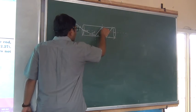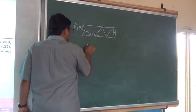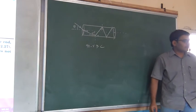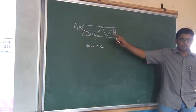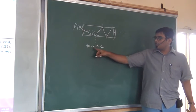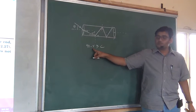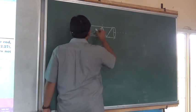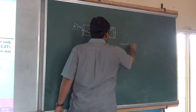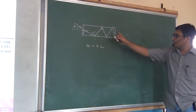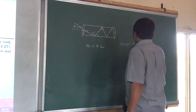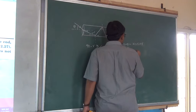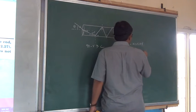We need a relation in terms of theta, so we relate R with theta using Snell's law. Mu_A times sin theta equals mu times sin R. Therefore, sin R equals sin theta upon mu.